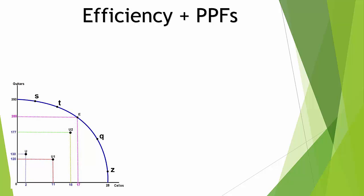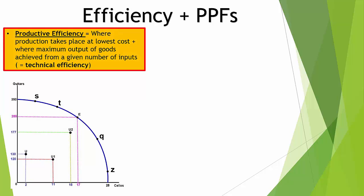We need to look at efficiency in relation to PPFs, as exam boards will ask about this. There are two types. Productive efficiency occurs where production takes place at the lowest possible cost, requiring technical efficiency — producing the maximum output from a given number of inputs. The PPF curve, showing the maximum possible combination of goods, demonstrates exactly that. Any point on the line — Z, Q, E, T, S — is productively efficient.